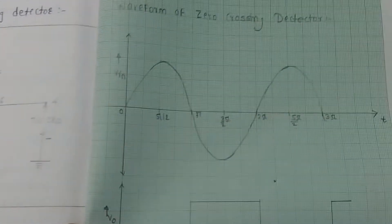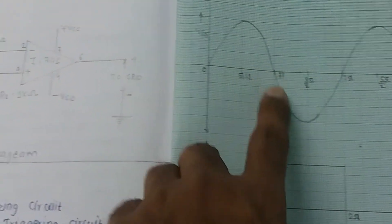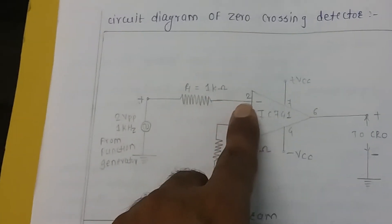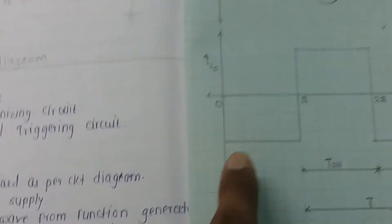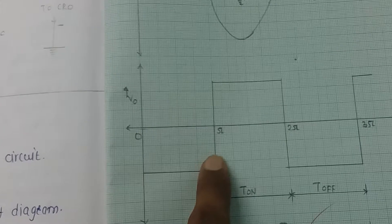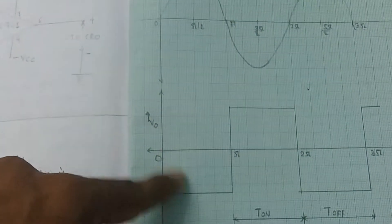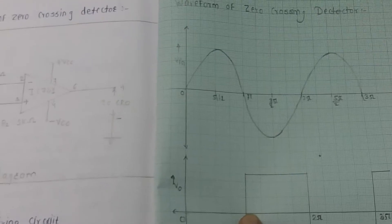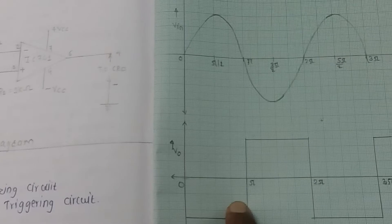The zero crossing detector works as follows: the input is a sinusoidal waveform. Whenever the input crosses zero, the output is produced. The output is produced from zero to pi. Since the input is connected to the minus terminal, the output is inverted — when the input is positive, the output is negative. The result is a square waveform output from the operational amplifier.